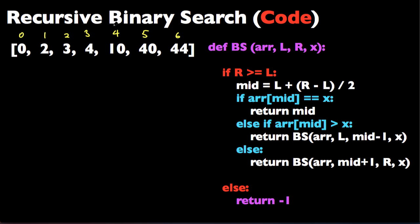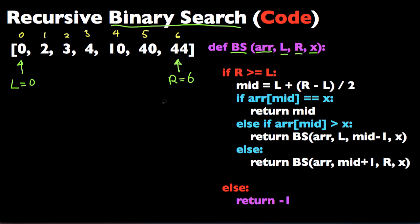So here's binary search implemented recursively. We're defining our function — binary search of the given array, the element we're looking for X, and L and R. L keeps track of where the leftmost element of the current section we are looking at is, so L starts with 0, the leftmost element of the whole array. R keeps track of where the rightmost element of the current section we are looking at is, so R starts with 6 in this case. If R is less than L at any point while we're running this function, that means these pointers are flipped and we don't have any more elements to look at, so we didn't find X in this array and we're just going to return negative 1.